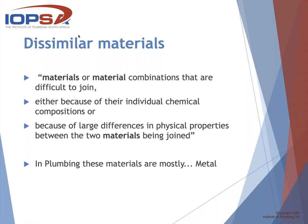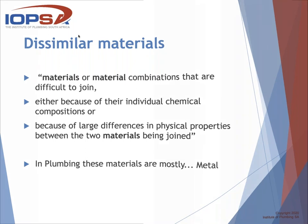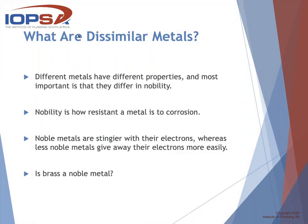So what are the dissimilar metals? Different metals have different properties, and most importantly they differ in their nobility. Nobility is how resistant they are to corrosion — noble metals are more stingy with their electrons, where less noble metals give away electrons much more easily. So is brass a noble metal? Let's have a look at the periodic table — we'll answer that question as we go along.